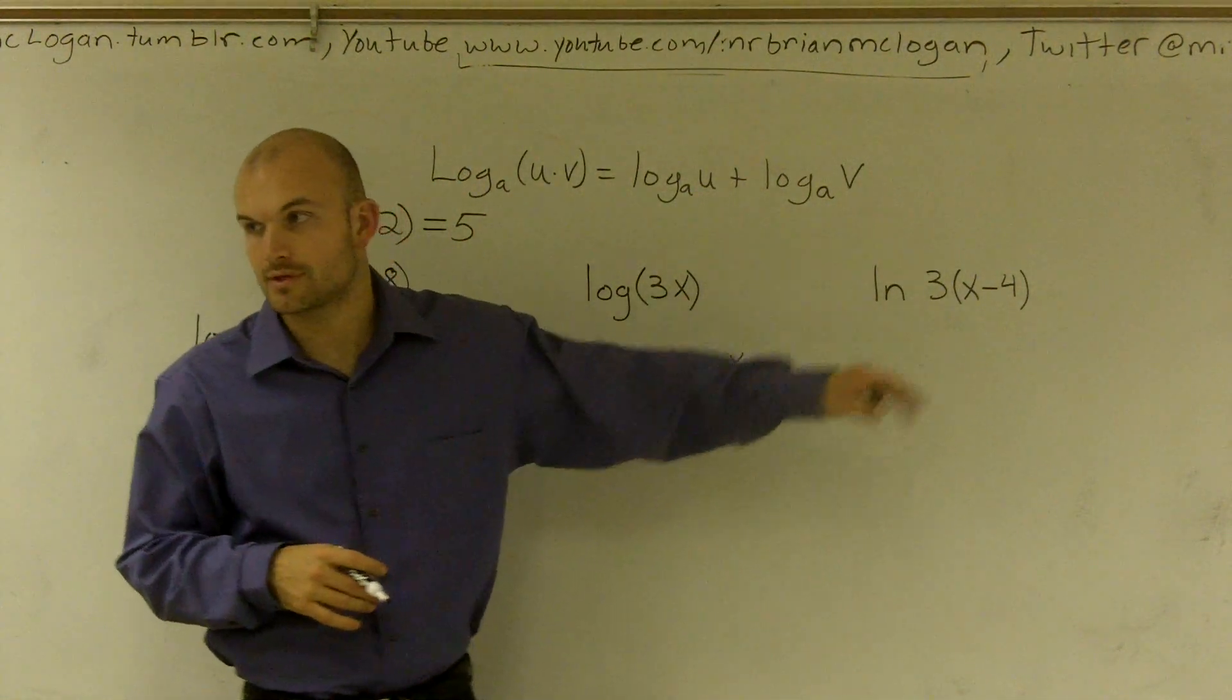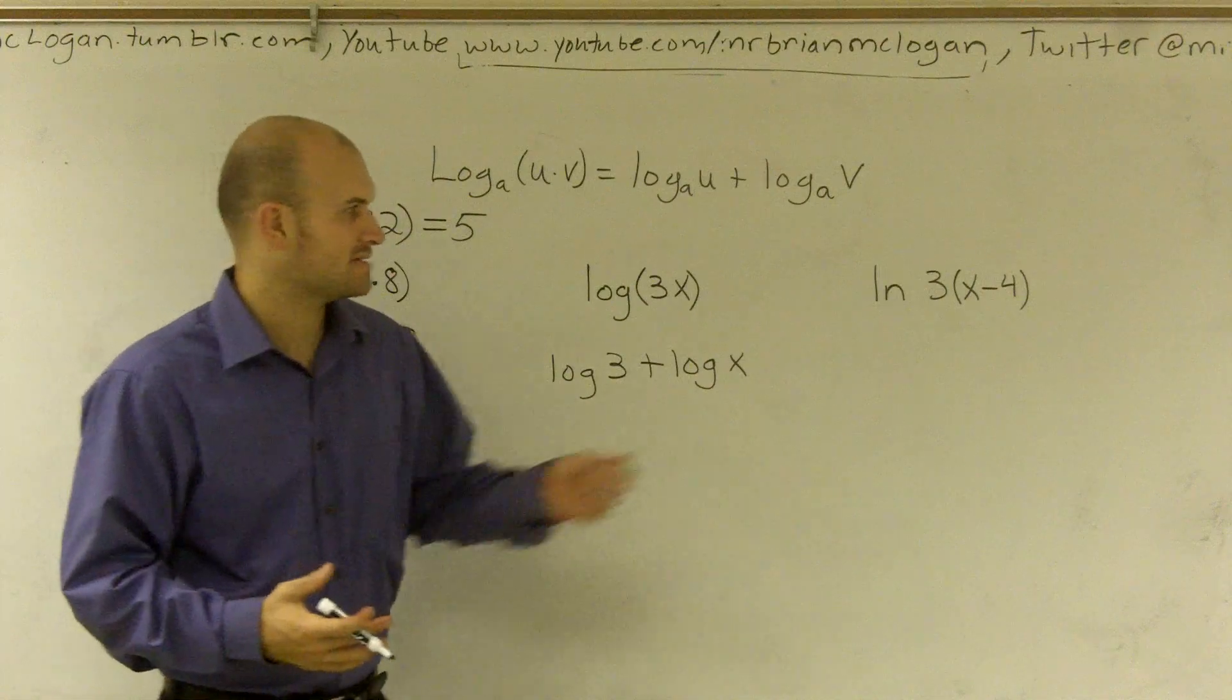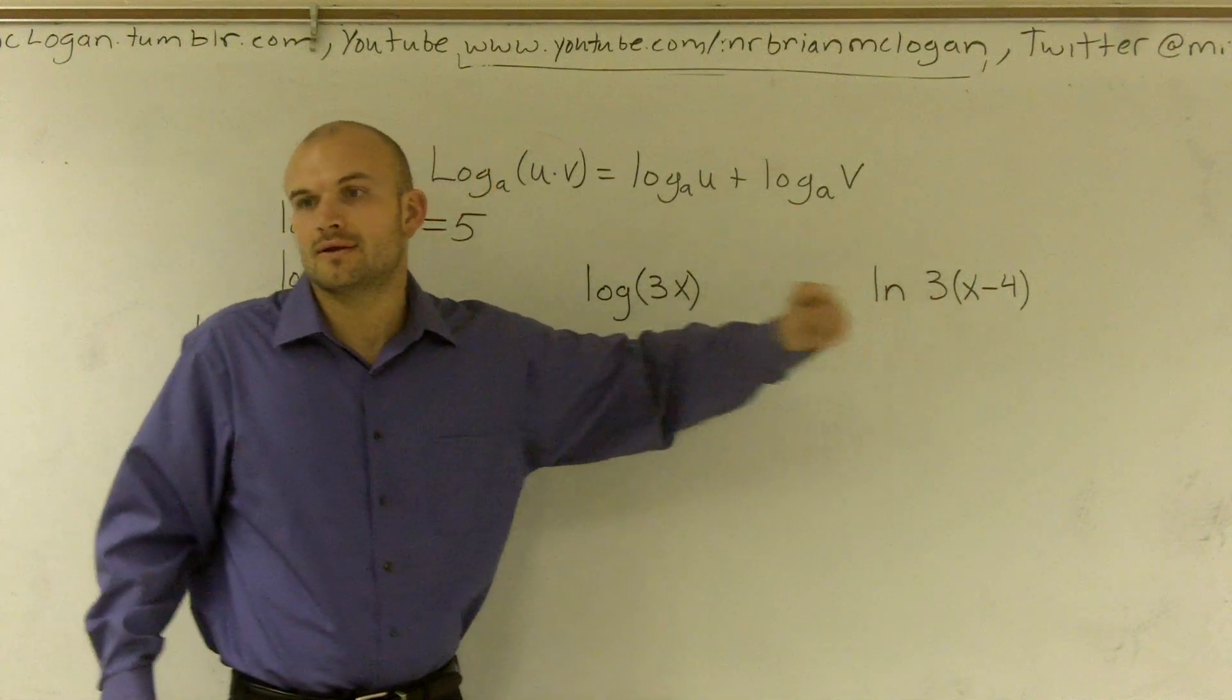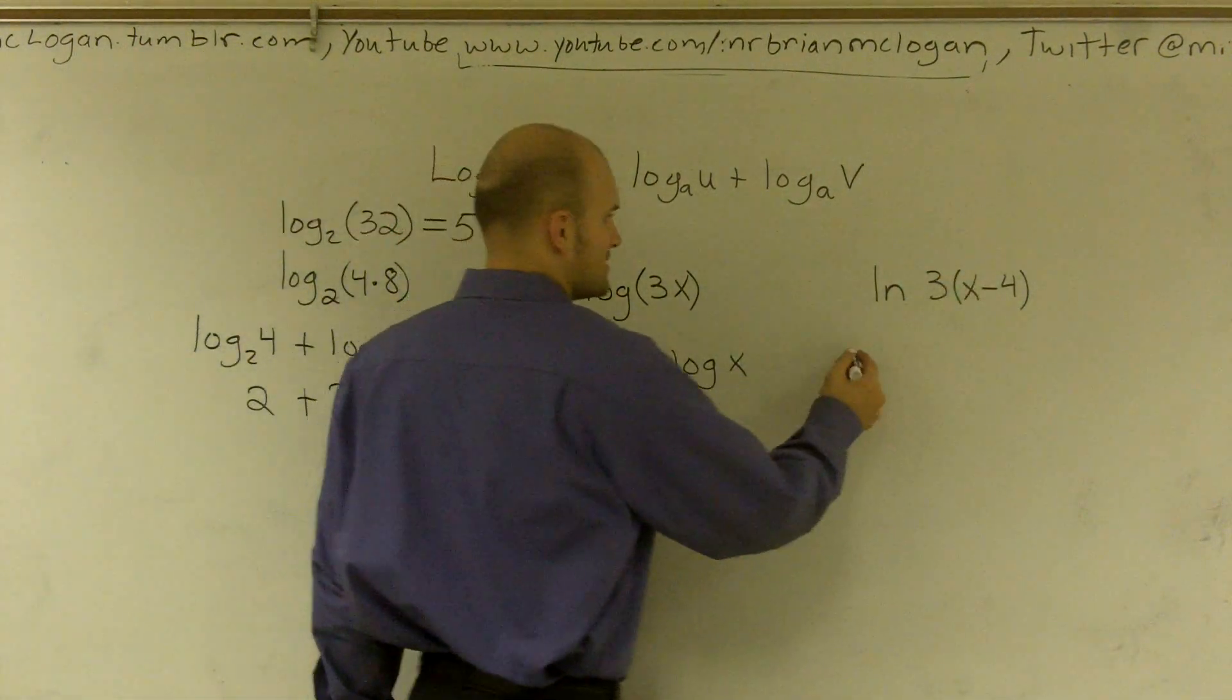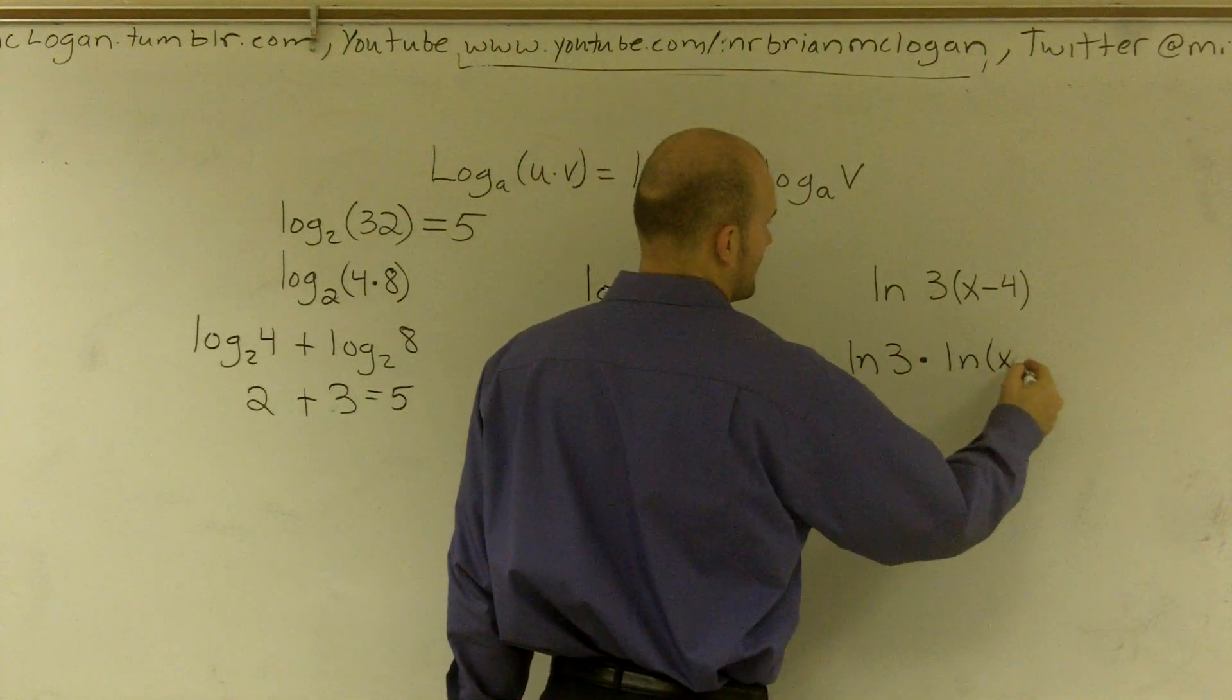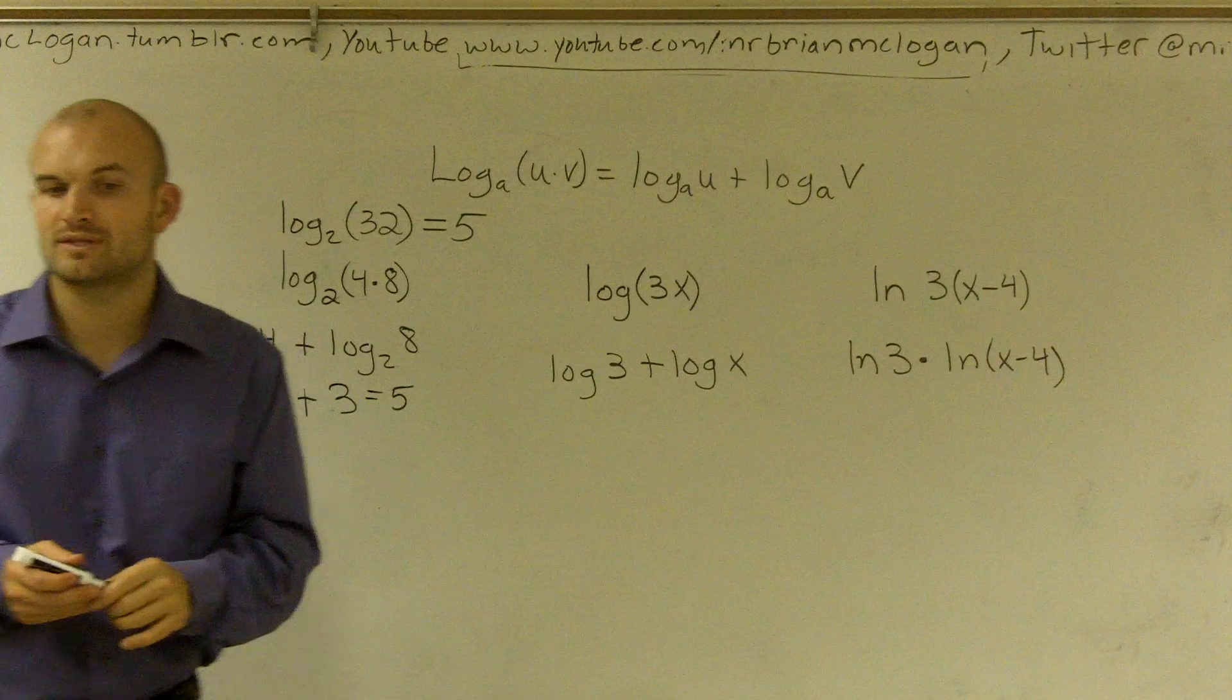Here we have a natural logarithm, ln(3(x-4)). Natural logarithms have base e, but we don't need to write out that base. I have a monomial times a binomial, which is fine - we just separate these as two different terms. So I'll have ln(3) plus ln(x-4). That's how you expand a logarithm using the multiplication property with addition.